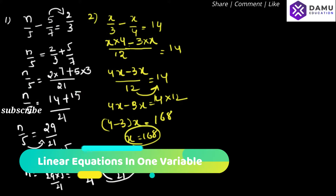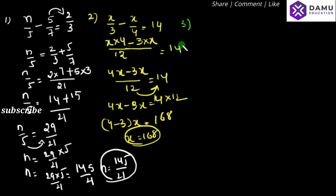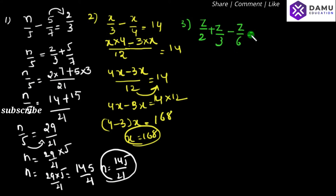Next, our third question is: z by 2 plus z by 3 minus z by 6 will be equal to 8. Here z is common and the denominators are 2, 3, and 6, so we need to take the least common multiple.